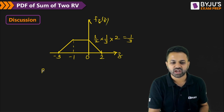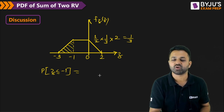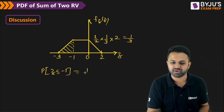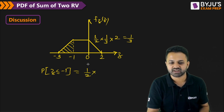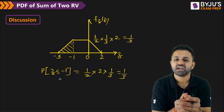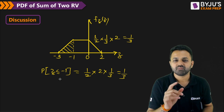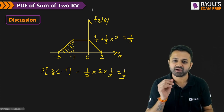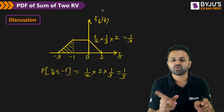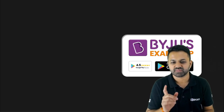Now you want to calculate the probability that Z is less than or equal to minus 1. You calculate the area under the PDF in this region, which is 1/2 times base times height. The result is 1/3. In this way you calculate the probability in a particular region using the concept of the central limit theorem and the trick of convolving symmetrical and unsymmetrical rectangular pulses.